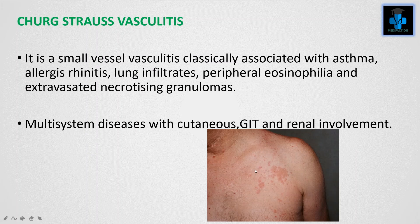Churg-Strauss vasculitis is a small vessel vasculitis classically associated with asthma, allergies, rhinitis, lung infiltrates, peripheral eosinophilia, and extravascular necrotizing granulomas.